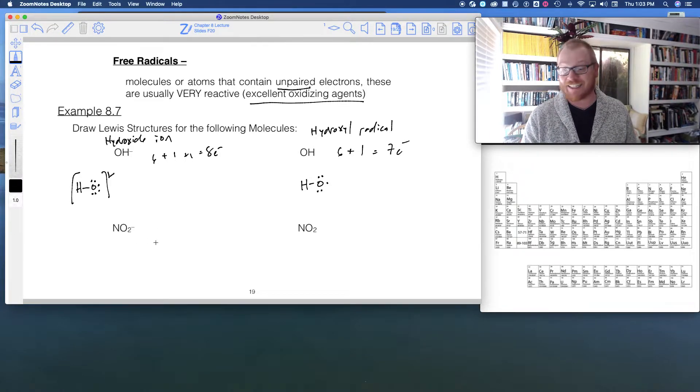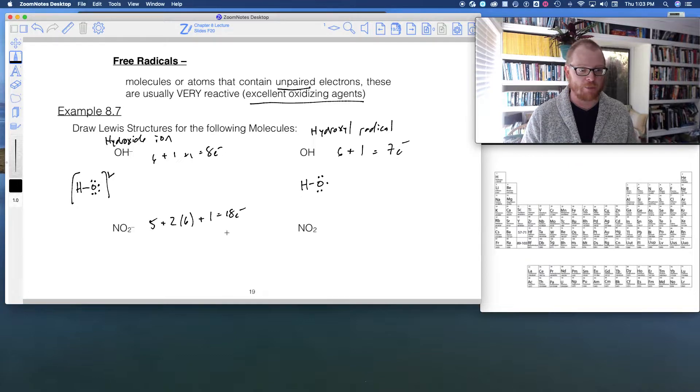So now what about nitrite, NO2 minus? So we know nitrite has five for nitrogen, and there's two oxygens, and each one is six plus a negative charge. So that gives me 12, 17, that gives me 18 electrons. Everything's paired up.